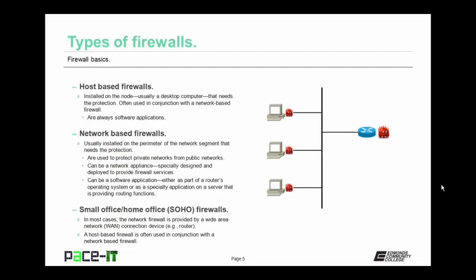For small office, home office firewalls, the network firewall is usually provided by a wide area network connection device — most often the DSL modem or the cable modem. In conjunction with this, a host-based firewall is often used alongside the network-based firewall. This provides more protection and allows for more granular configuration of the firewall protection as part of network security.